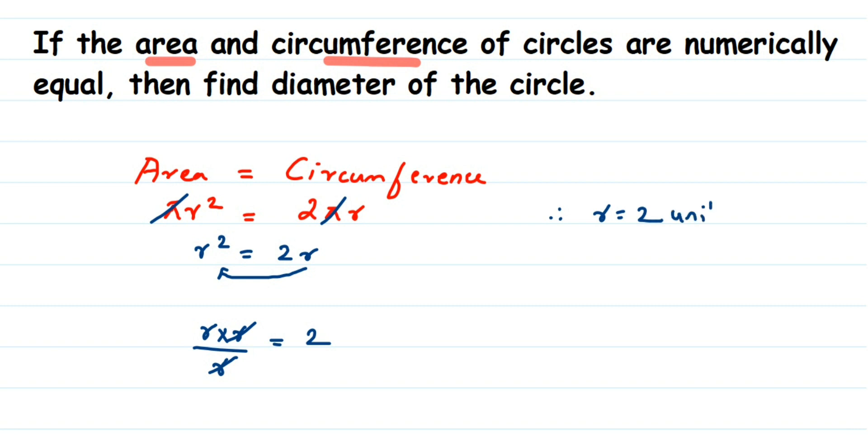So we got r is equal to 2 units. Since we have not given the units here, let me write down 2 units. Now once we got r, it's easy to find out the diameter. We know that diameter is twice the radius.